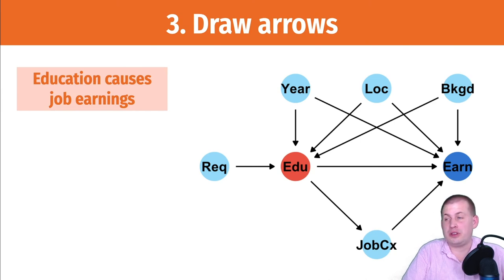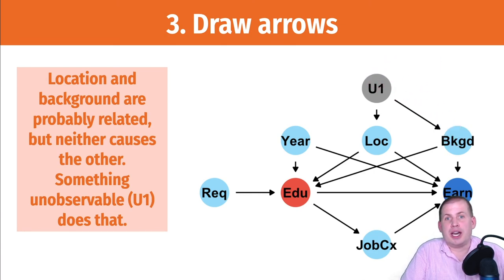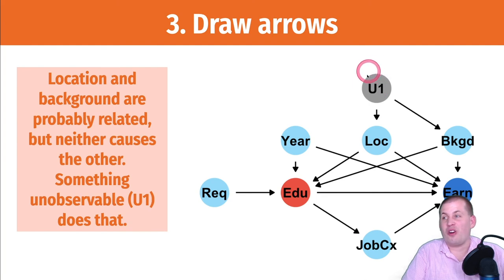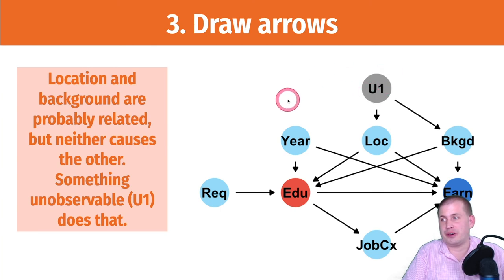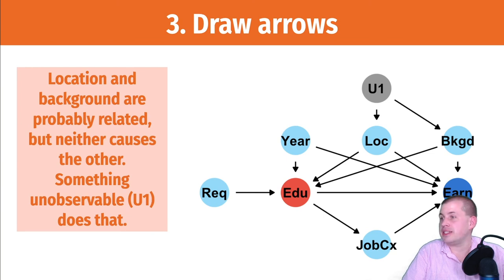We can even include nodes in the graph that aren't measurable. For instance, something unobservable causes both your location of birth and your background — like institutional racism, which affects where lots of people are born and has downstream effects. US history causes all sorts of things and won't be a column in your dataset. Even if something is unobservable, you can still include it in your causal model as part of your philosophy of what causes education and earnings.